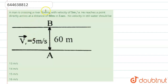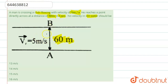The question is: a man is crossing a river flowing with velocity 5 meters per second. He reaches a point directly across at a distance of 60 meters — so the width of the river is 60 meters — in five seconds. We need to find his velocity in still water. The man is crossing from A to B directly in the flow of the river.